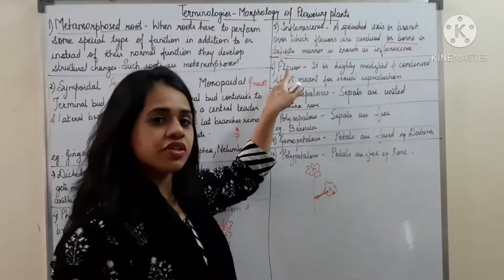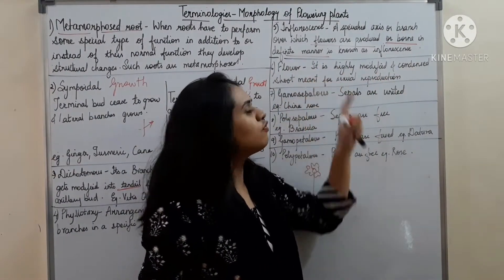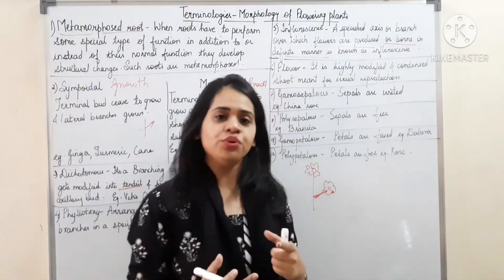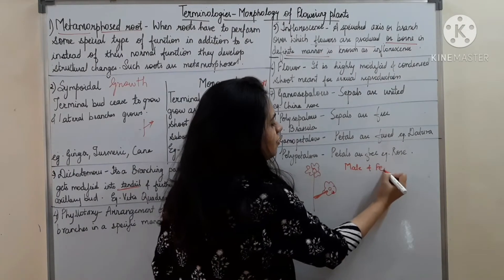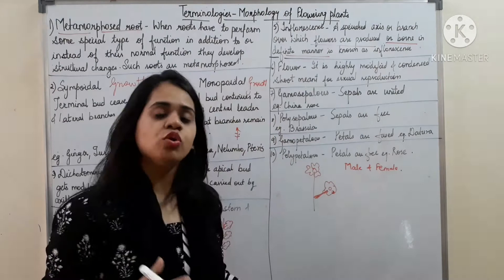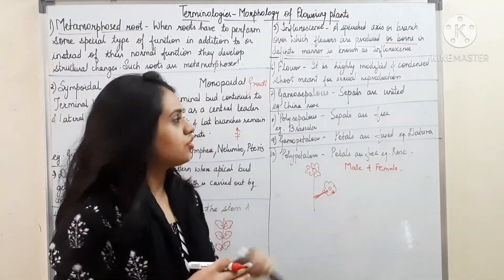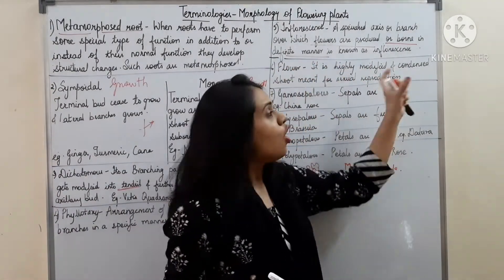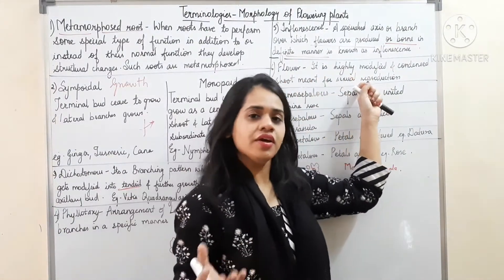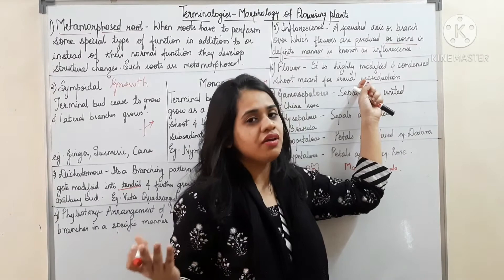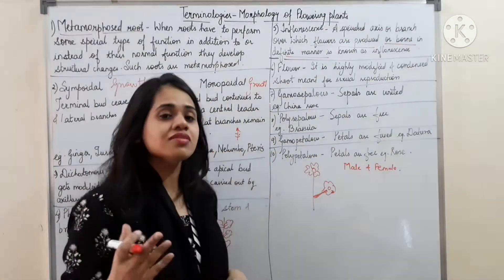Next comes the flower. What is a flower? It is a highly modified and condensed shoot meant for sexual reproduction. Flowers contain both male reproductive organs — stamen — and female reproductive organs — carpel — and both are present to carry out sexual reproduction.